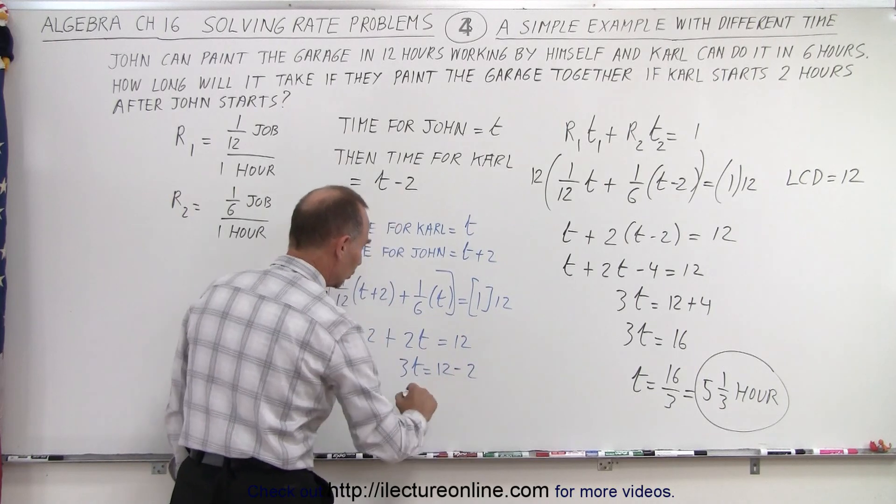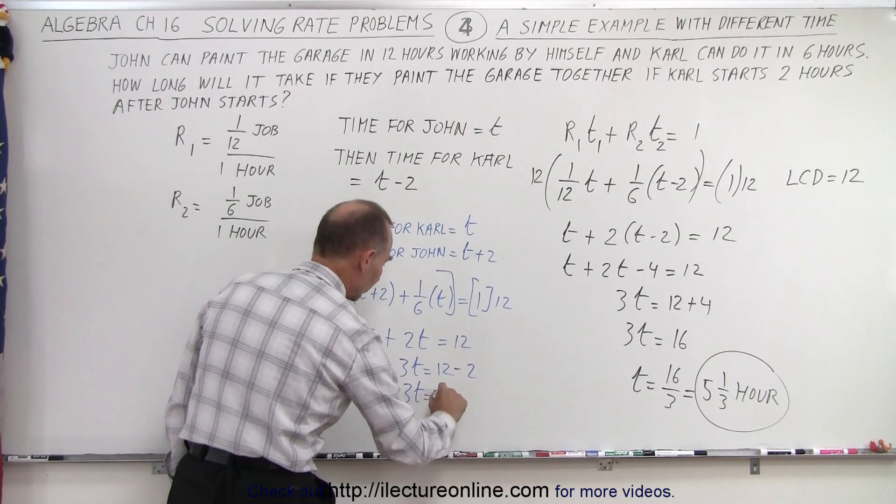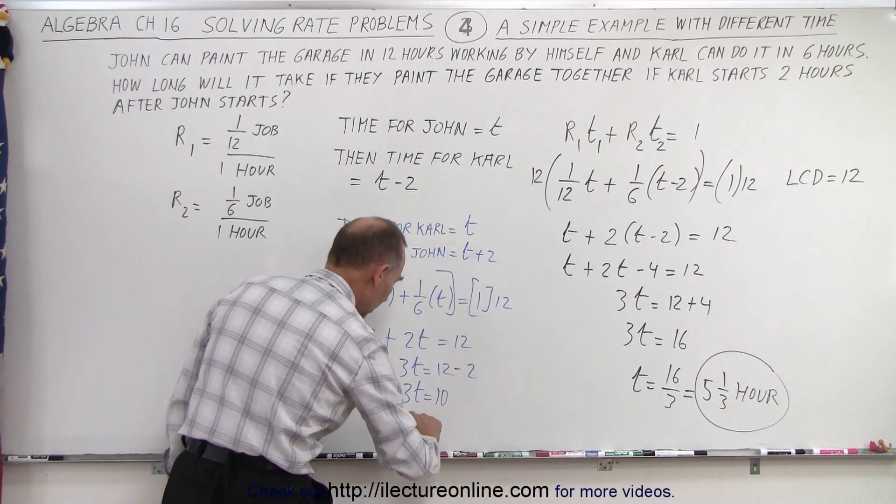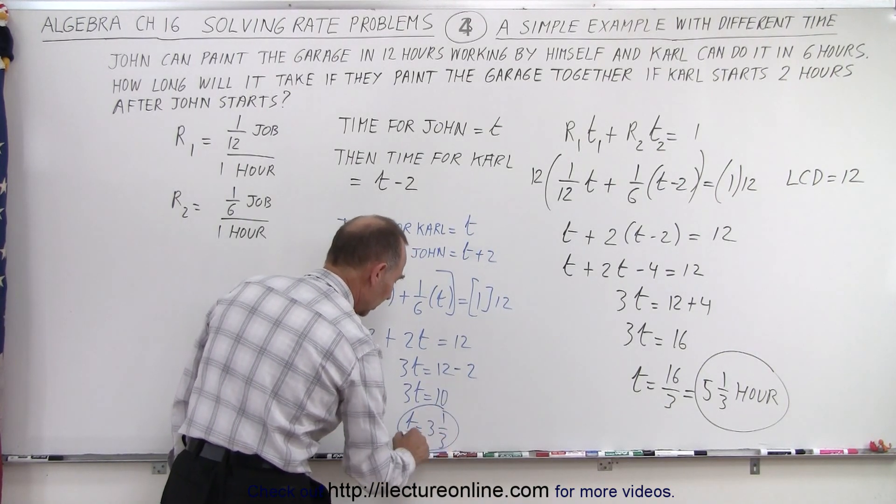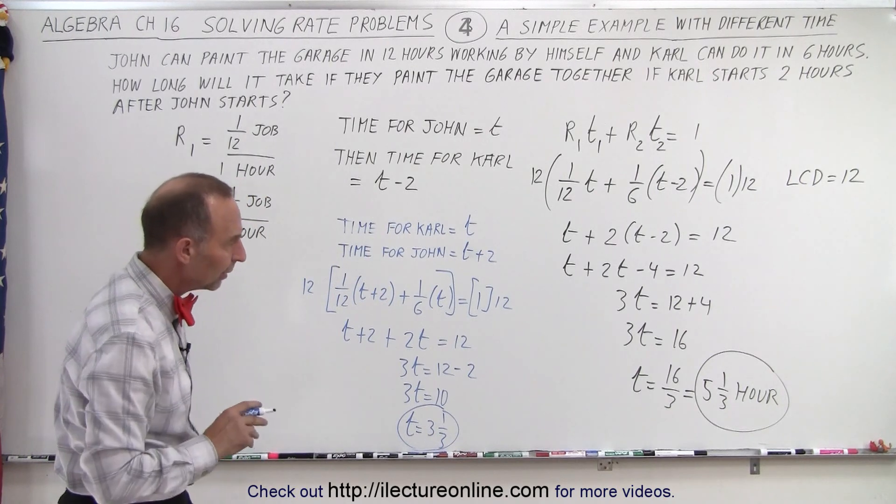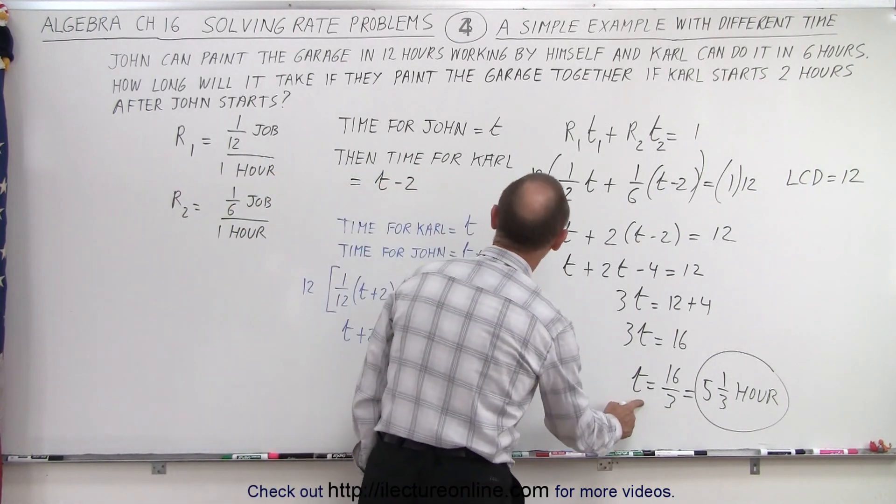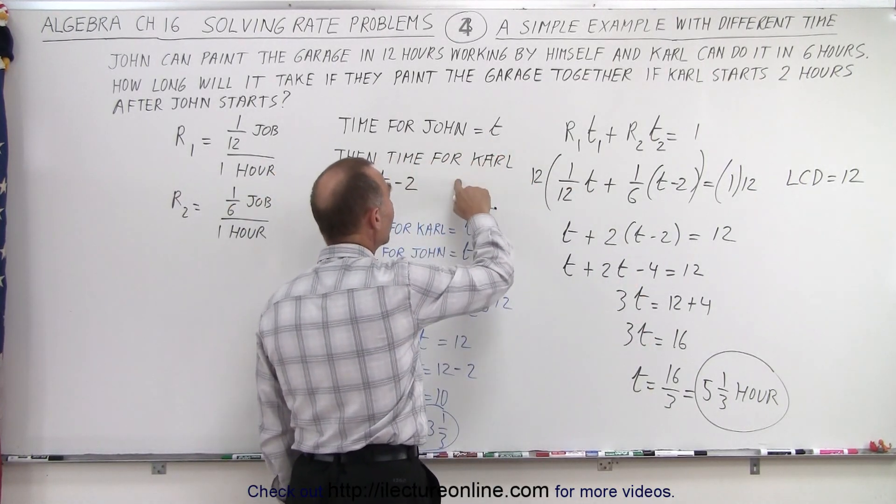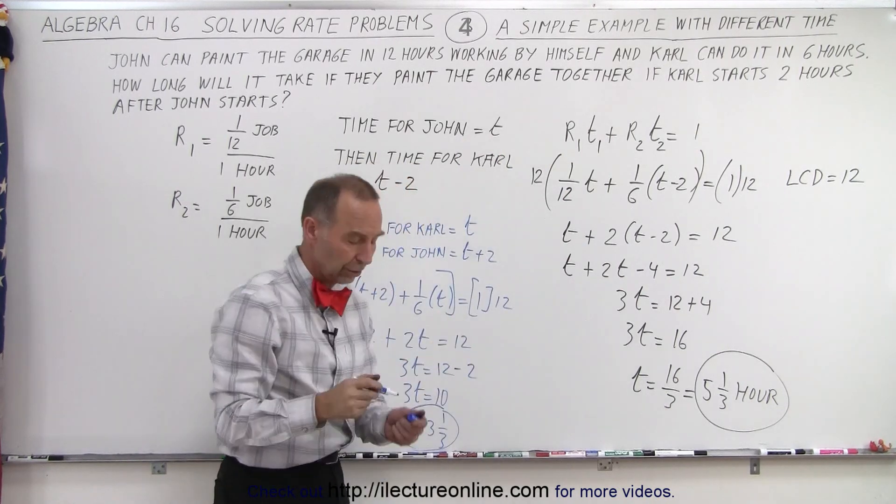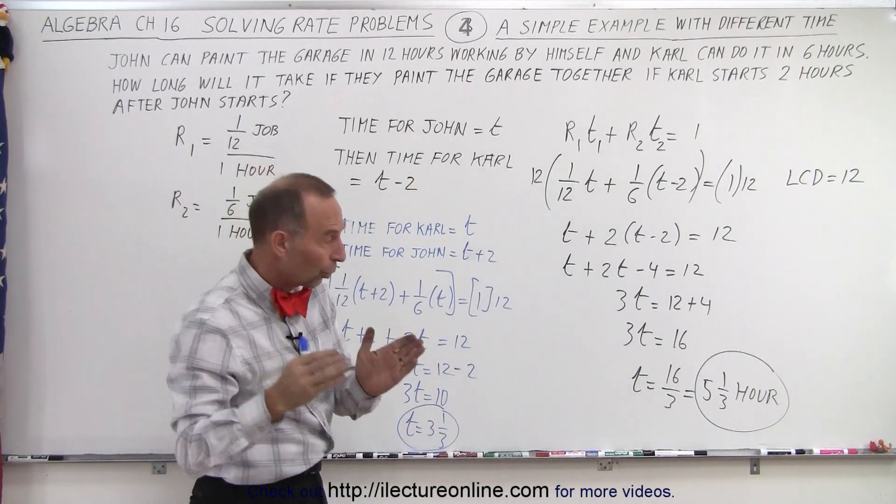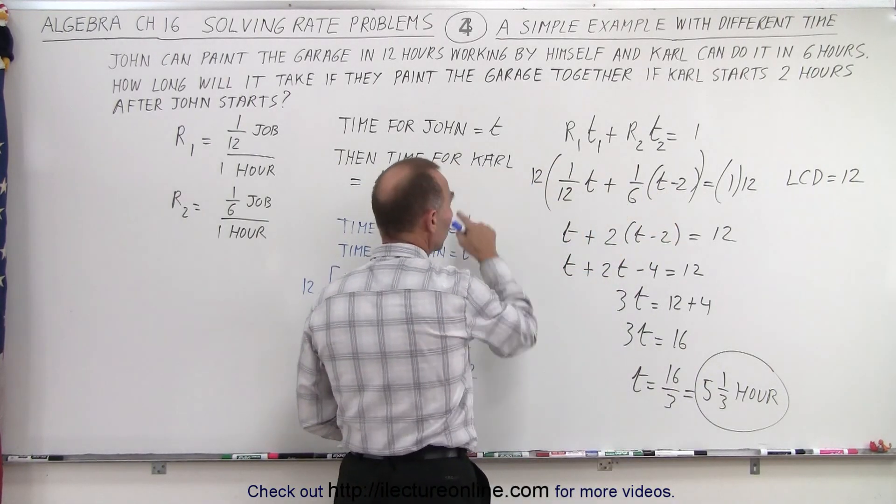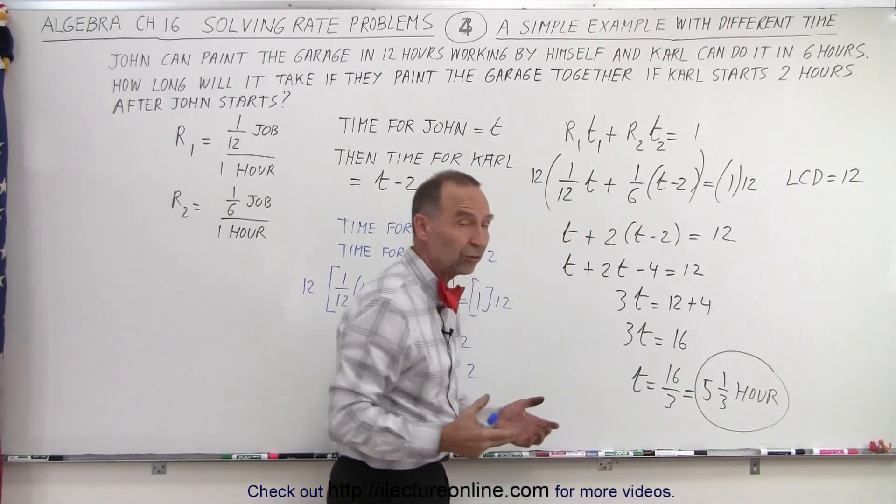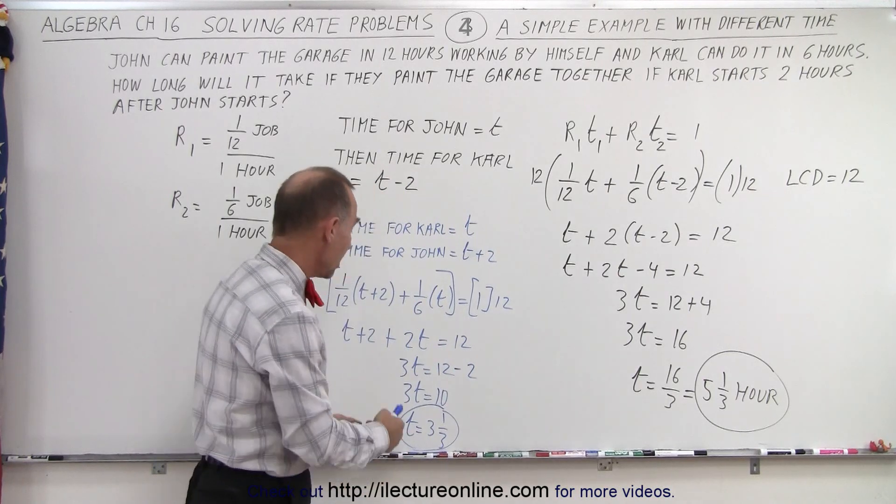Wait a minute, you got a different answer? Well, not really. Remember that t here represented John's time, and Carl started two hours later, so the total time worked by John would be 5 and 1/3 hours, and Carl would have worked two hours less, which is 3 and 1/3 hours.